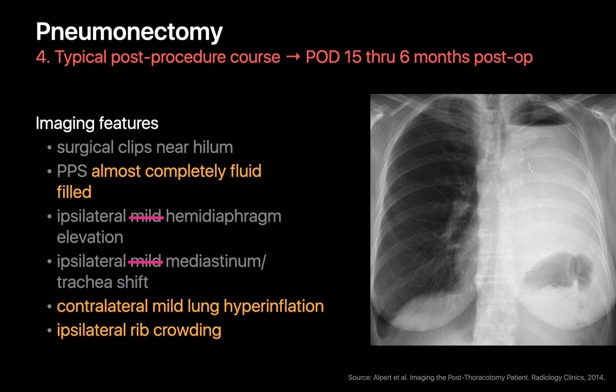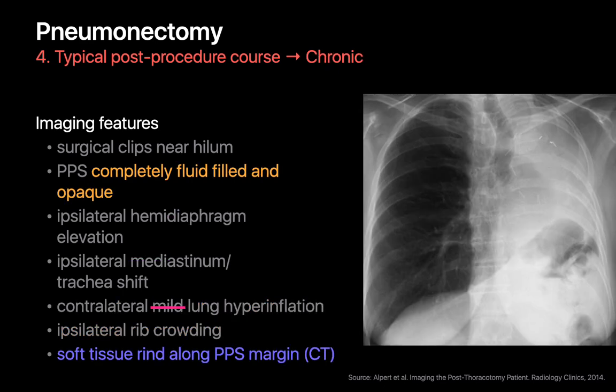On chest x-rays over the next six months, the post-pneumonectomy space will become completely filled with fluid and appear homogeneously opaque. As hemidiaphragm elevation and mediastinal shift become more pronounced, the contralateral lung will appear hyperinflated. You may also get a sense that the rib cage on the side of the pneumonectomy has slightly contracted, resulting in crowding of the ribs on that side.